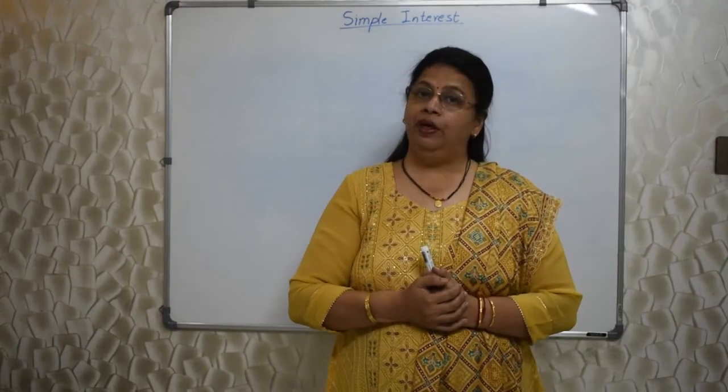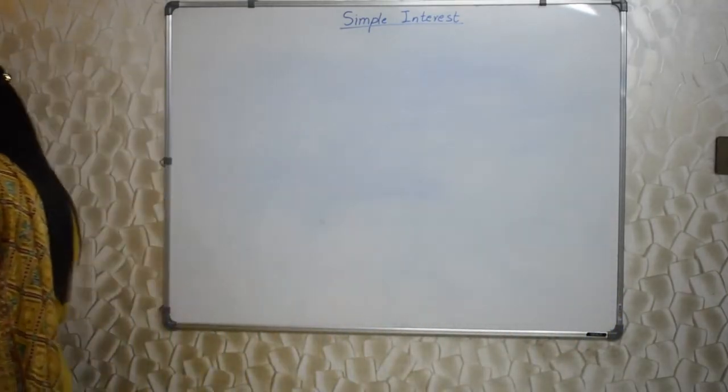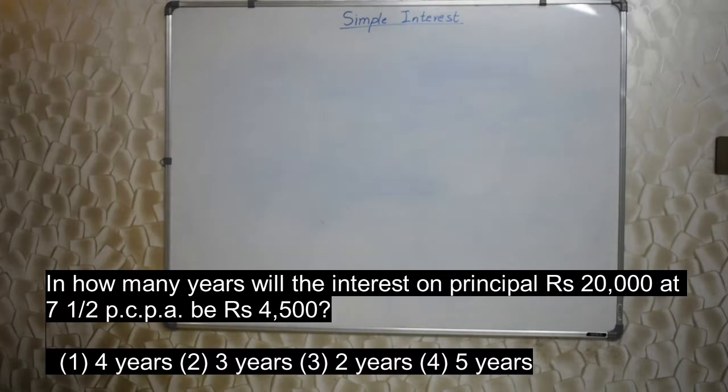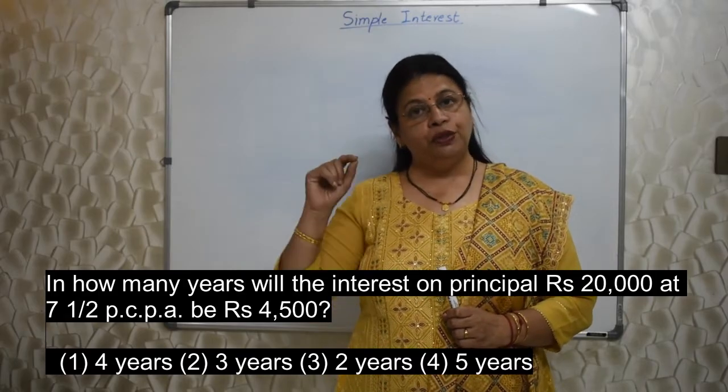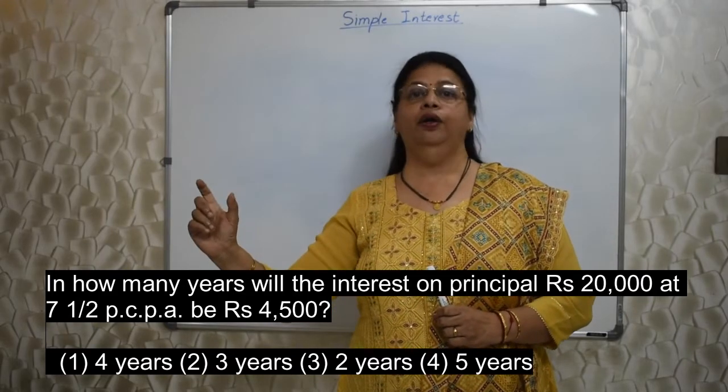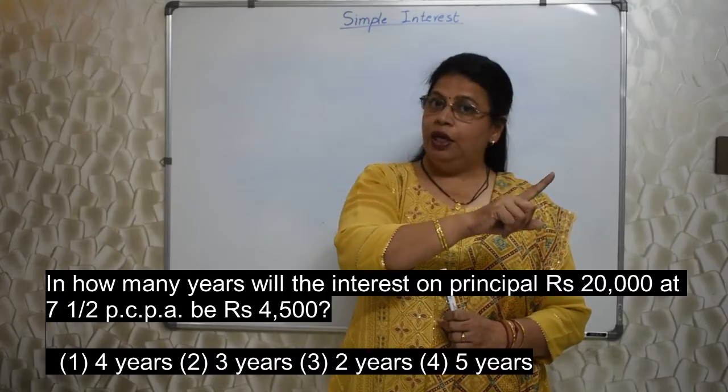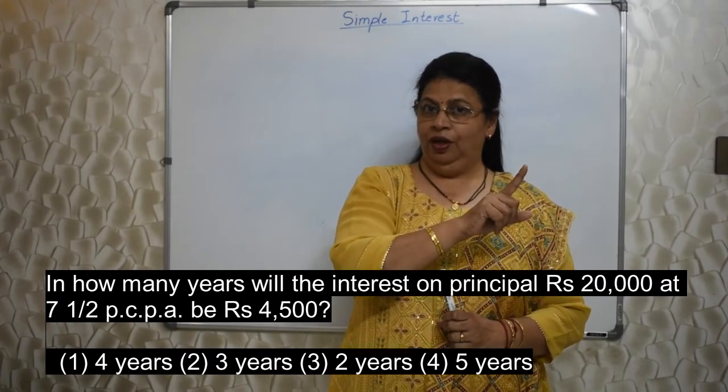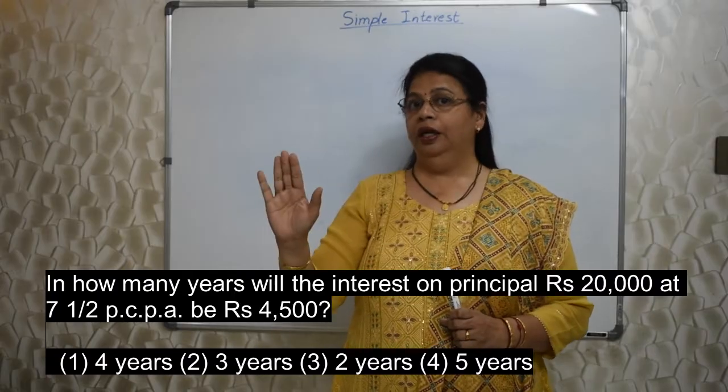If you do not understand or misinterpret the question, your answer is bound to be wrong. So here you are supposed to read the question properly, find out what information they have given us and what they have asked. Okay. So we will start with this. And the first question will appear on your screen. As I told you earlier, the reading has to be done properly. Here rupees 4,500 is the last part of this question. But it is the interest.